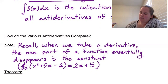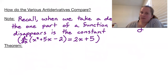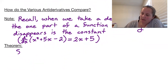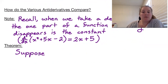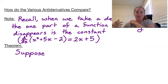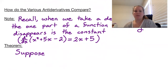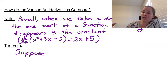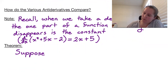So what we get then is that the only difference between anti-derivatives is what that constant term might be. When we take the derivative, the constant term essentially disappears — we lose that information. It turns out that's really the only piece of information lost in a derivative.